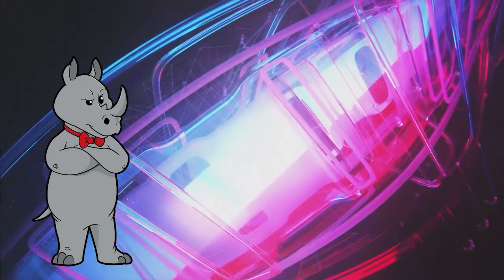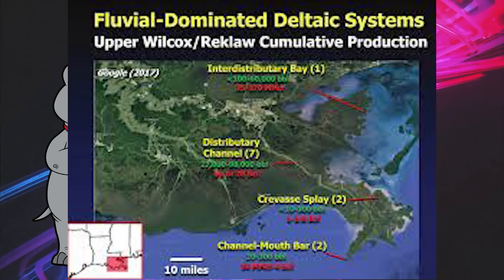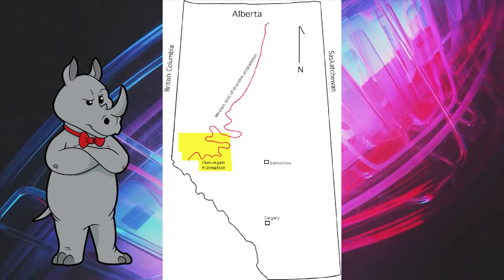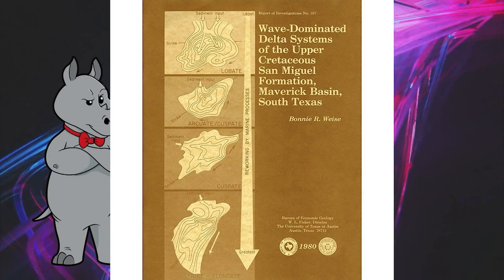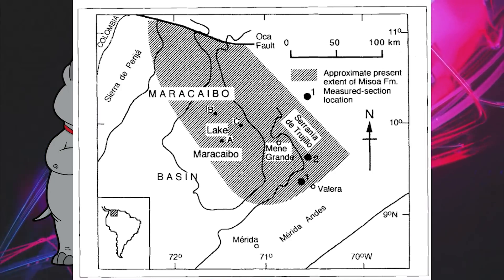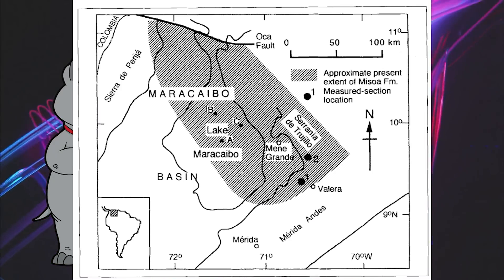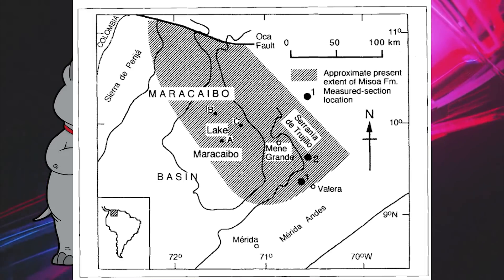Some examples of ancient deltaic systems include the Wilcox Group of Texas, the Dunvegan Formation in Canada, the San Miguel Formation in Texas, and the Mesoa Formation in Venezuela, which is one of the larger deltas extending about 250 kilometers from its source.